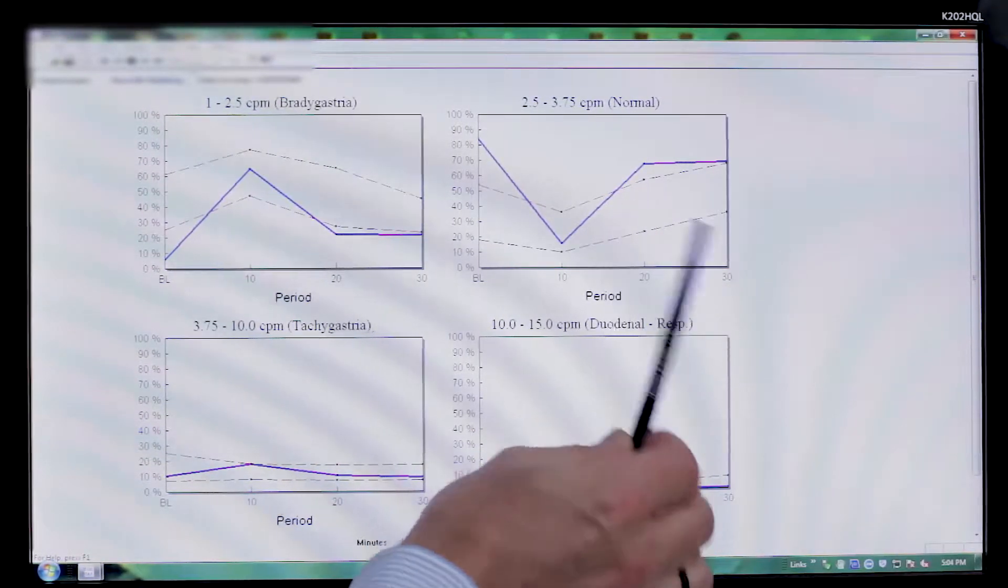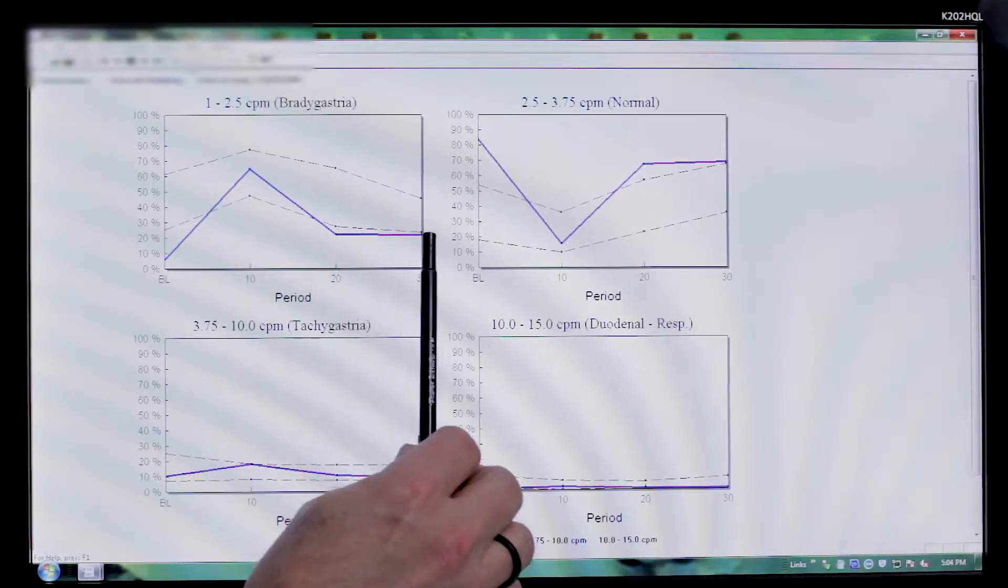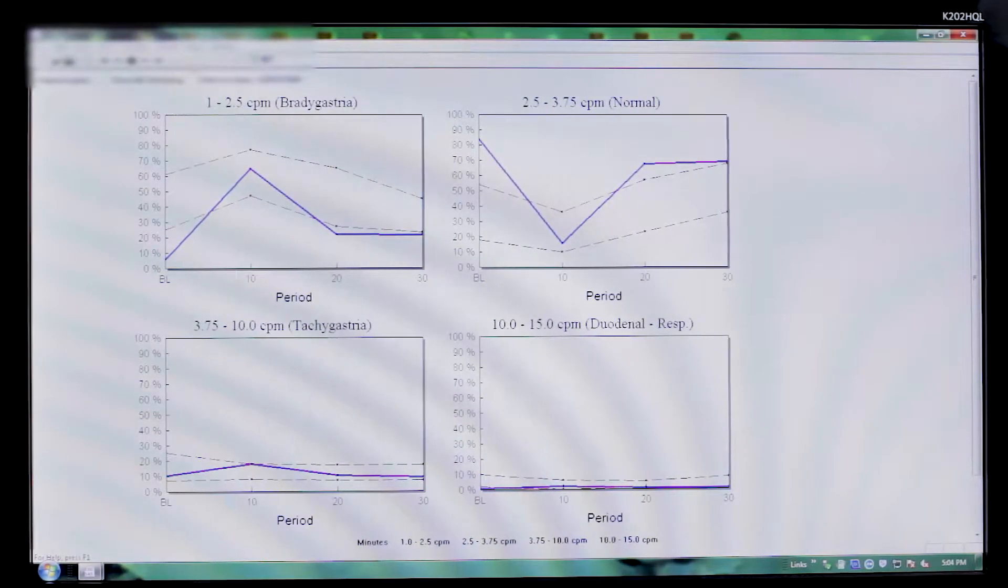You will notice that there are a series of broken red lines. What these broken red lines represent are the upper and lower limit of normal based upon 30 to 40 population-based normals who had multiple EGGs done on separate days. The beauty of this software is that your patient serves as his own control, but then that is compared to population-based normals.